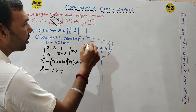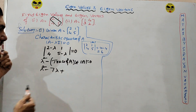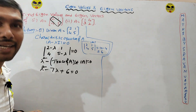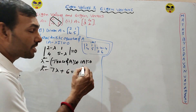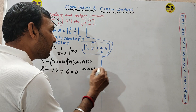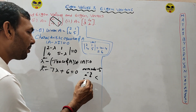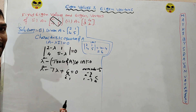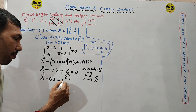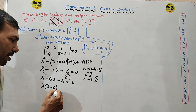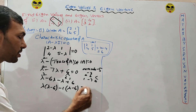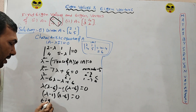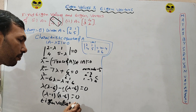Det(A) for matrix [2,1;4,5]: 2×5 = 10, minus 4×1 = 4, so det(A) = 6. The characteristic equation becomes lambda squared minus 7 lambda plus 6 equals 0. Factorizing: lambda squared minus 6·lambda minus lambda plus 6; lambda·(lambda minus 6) minus 1·(lambda minus 6) equals 0. So lambda values are 1 and 6. Eigenvalues are 1 and 6.